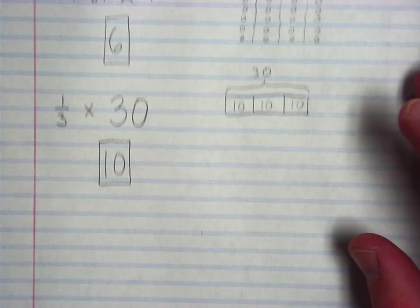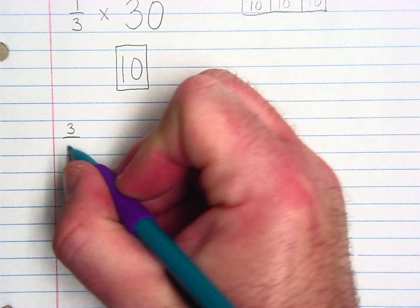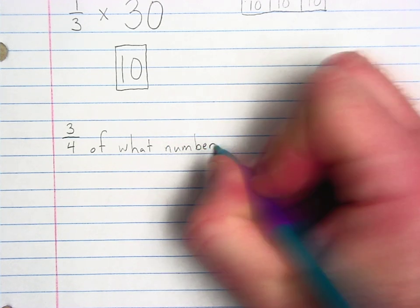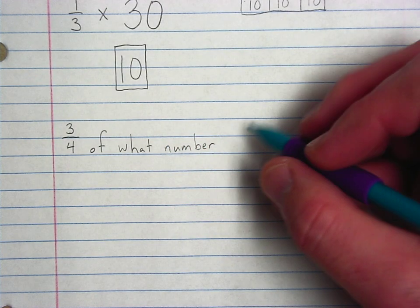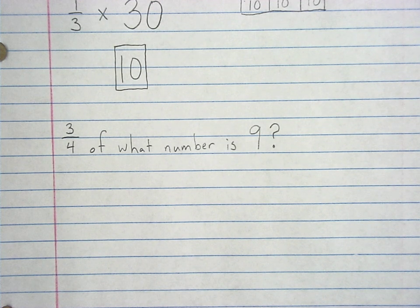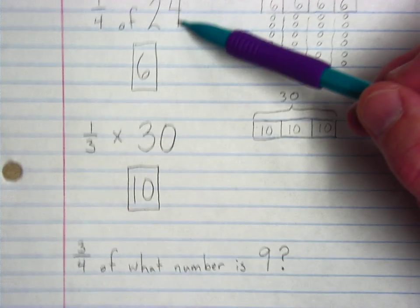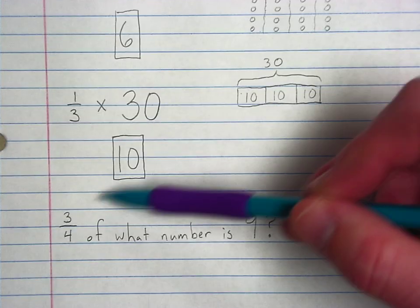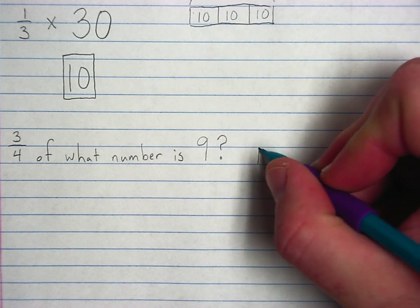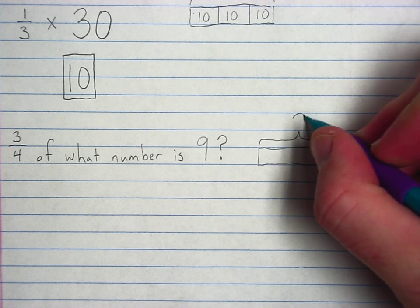Now, you might get some other ones that look a little different. Let's say I ask you for three-fourths of what number is 9. Oh, boy. All right. Well, three-fourths of what number. The what number is the piece that we've been given every time. Fraction of something, fraction of something, fraction of something. This is actually not going to be all that different. We're going to start with a tape diagram. Now, this time, we don't know what that whole number is. So, we'll put a question mark.